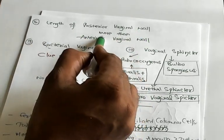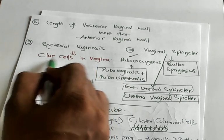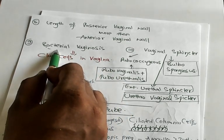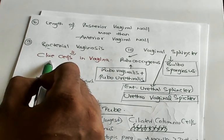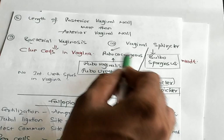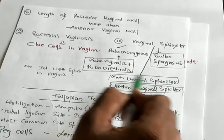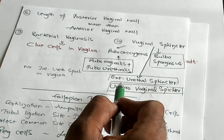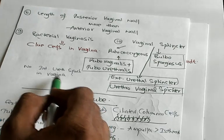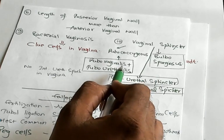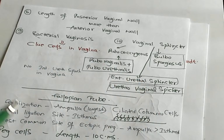Length of posterior vaginal wall is more than the anterior vaginal wall. Where do you find clue cells? Clue cells are typically seen in vagina and they are those organism-laden cells in bacterial vaginosis. How is the vaginal sphincter formed? Vaginal sphincter is formed by pubococcygeus, bulbospongiosus, external urethral sphincter, urethrovaginal sphincter. There is no internal urethral sphincter in case of females.